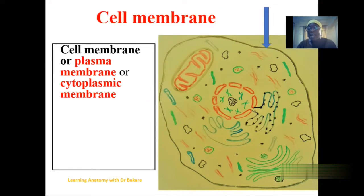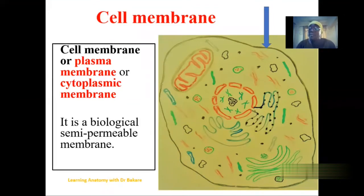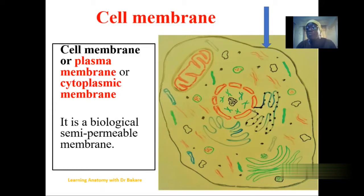The cell membrane is a semi-permeable membrane in the sense that it allows small molecules to pass through it, while bigger molecules are prevented from passing through. When the need arises and they have to pass through, they are being transported through membrane proteins. We'll get to membrane proteins during the course of this lecture to see how they are able to participate in the process of transporting structures to and through the cytoplasm.